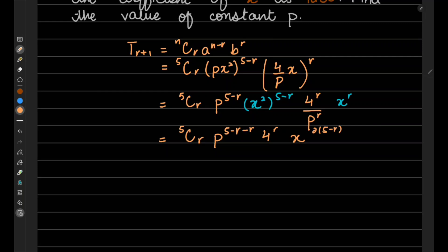Two times (5-r) plus r. So this will become 5Cr p^(5-2r) 4^r, and then x^(10-2r), minus 2r plus r, so it will become x^(10-r), x to the power (10-r).